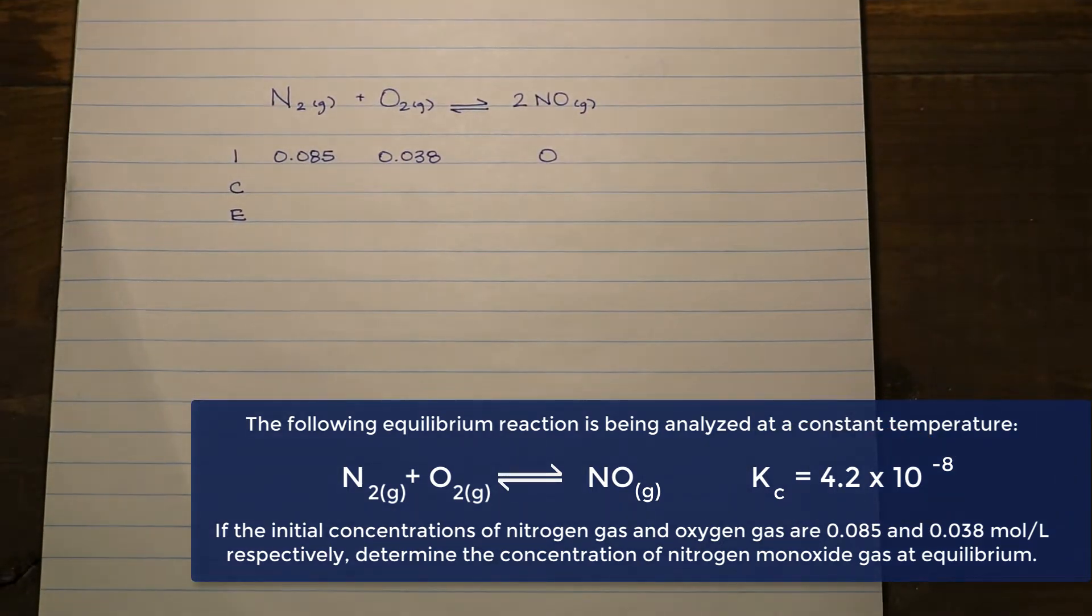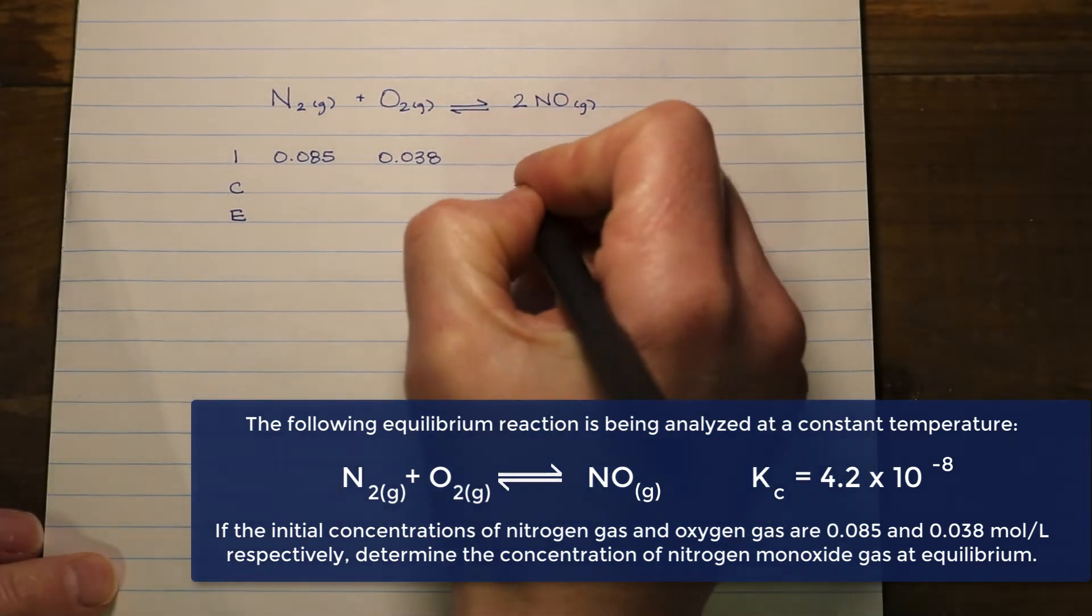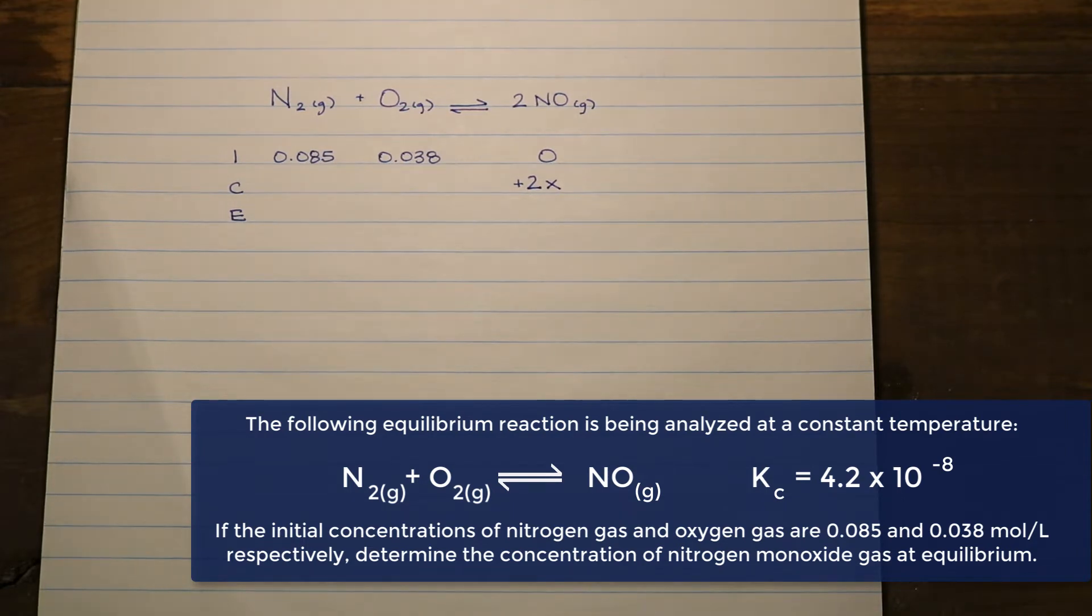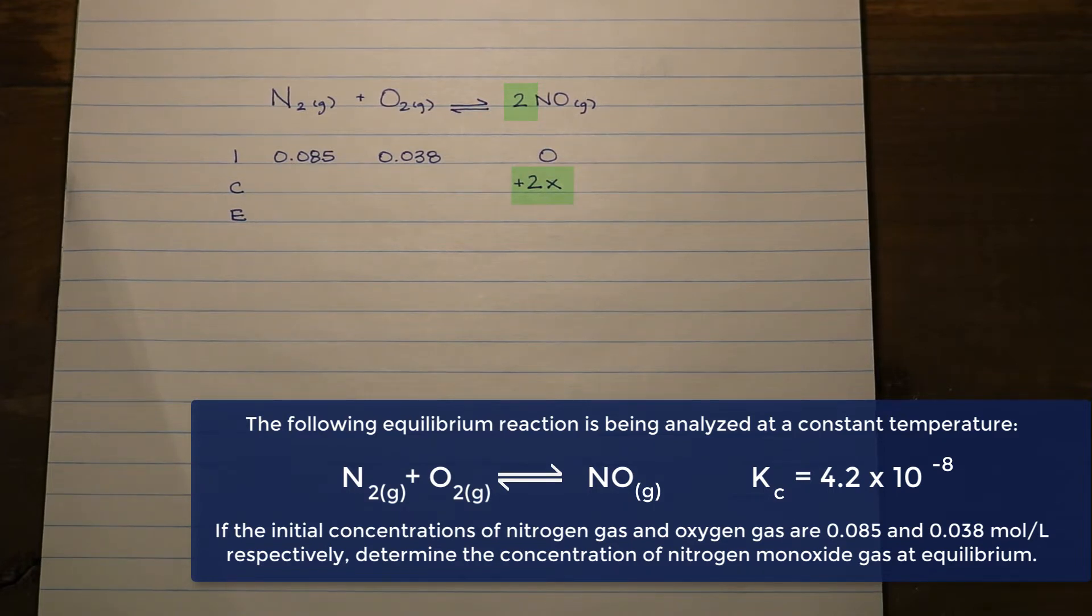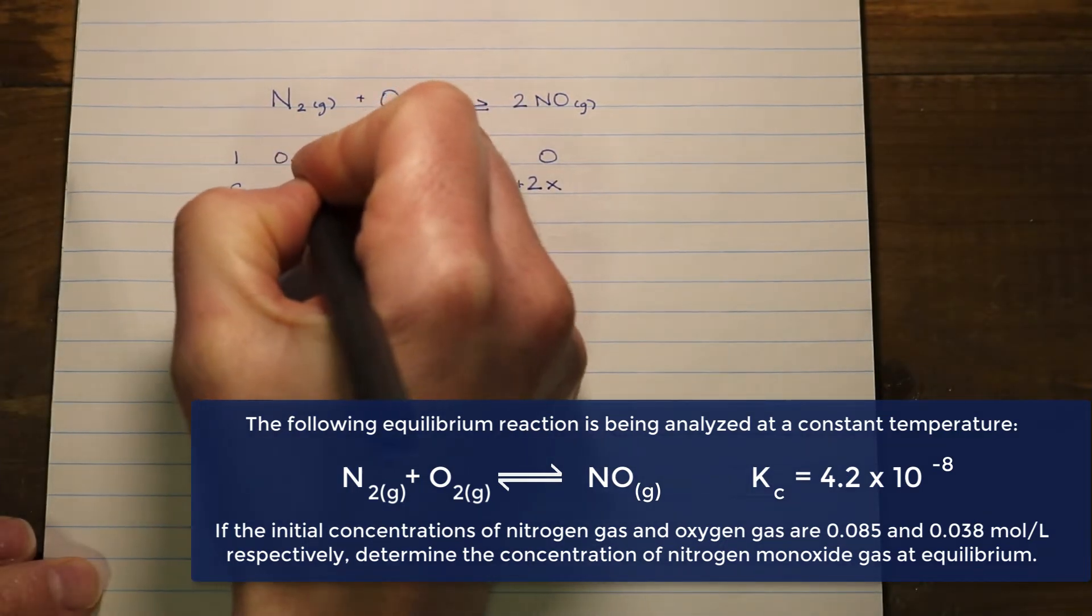I've written down what our starting amounts are. They are in moles per liter so they're already concentrations. The product concentration is zero because initially we only have the reactants. For our product, it is going to go up by 2x because the coefficient is two. If we take a look at our reactant side, these two are going to go down by that same factor x.